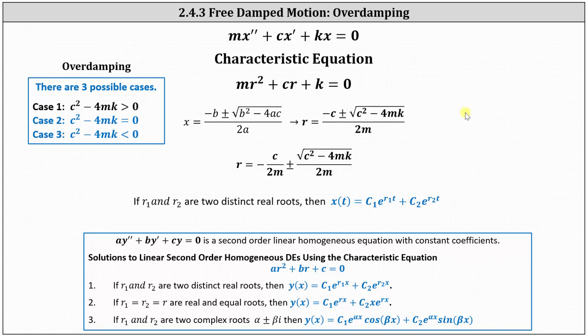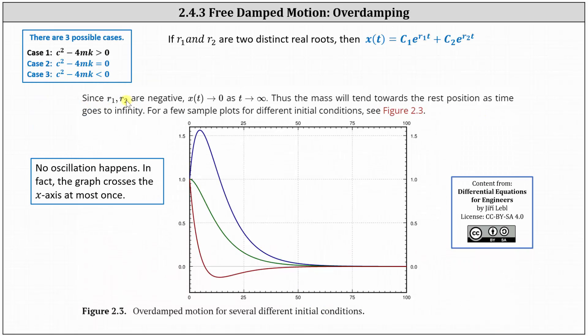Let's look at a graph of overdamping. Since r sub one and r sub two will always be negative, x of t approaches zero as t approaches infinity. Thus, the mass will tend towards the rest position as time goes to infinity.